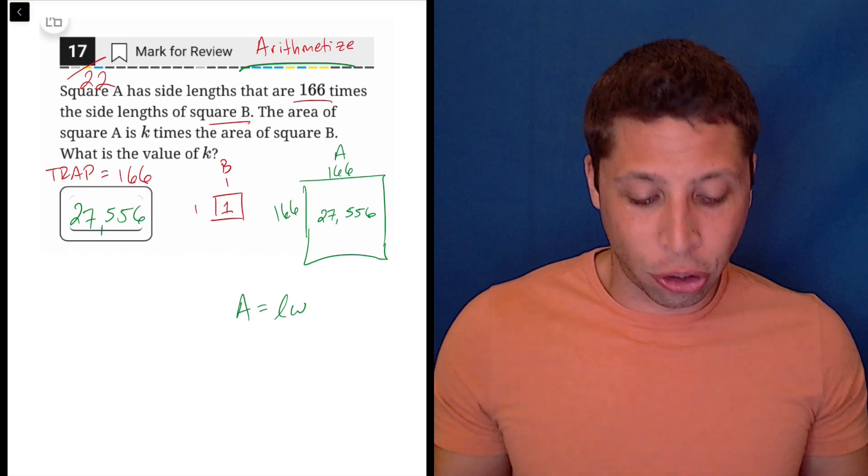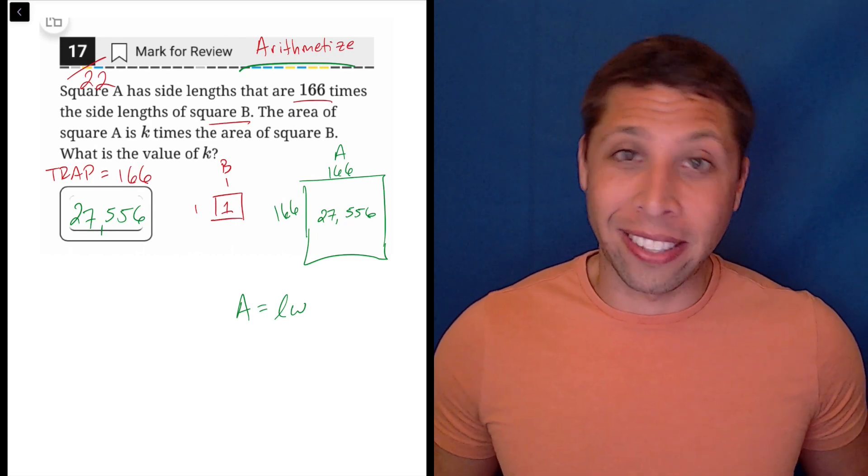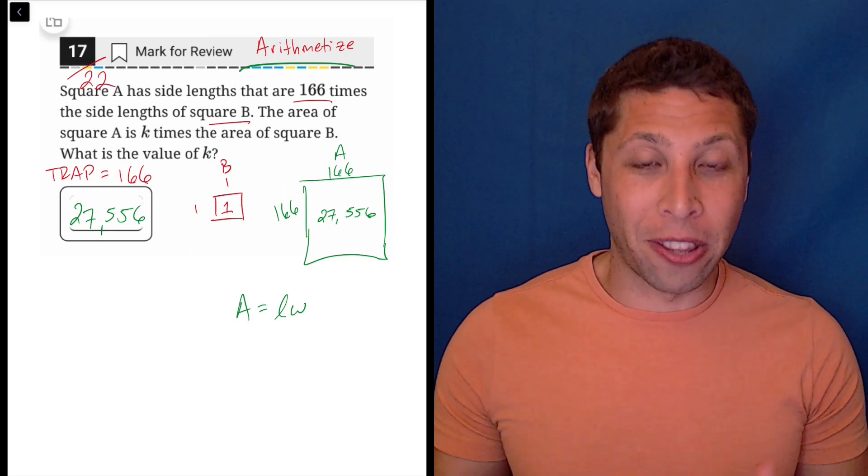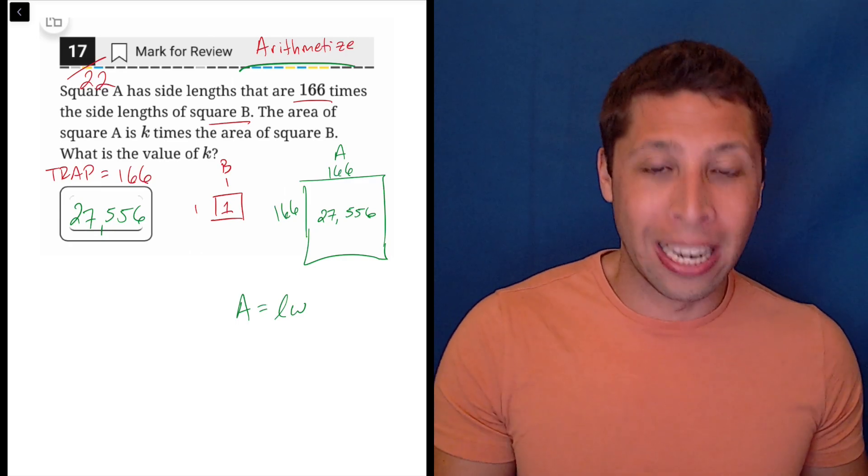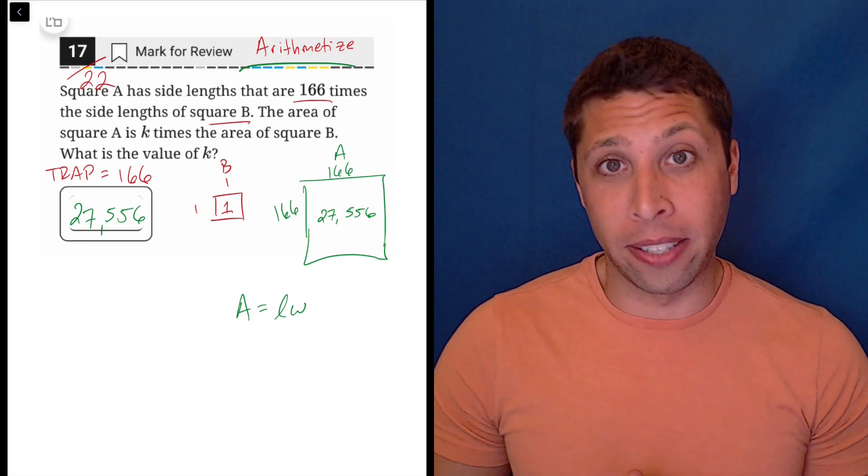So that is the answer here. It may make you nervous because it's a big number, but that's kind of the point. They wanted you to be nervous. They wanted you to not have an intuition about these squares, and they're hoping, I think, that you pick 166 kind of out of panic.